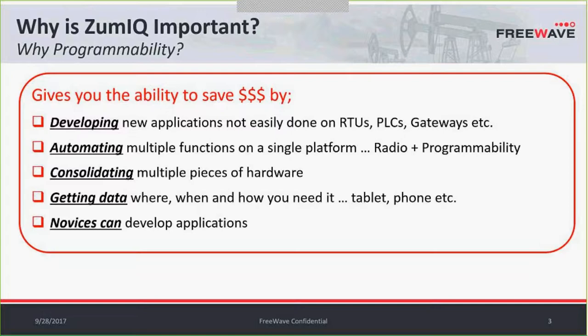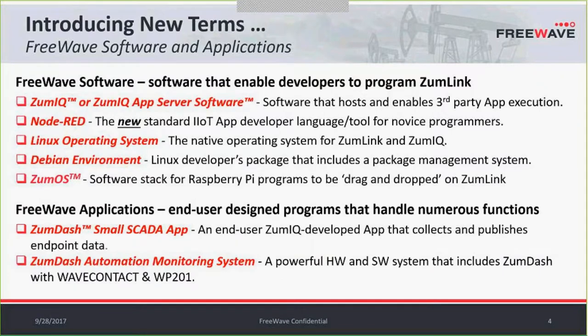ZoomIQ allows third-party apps to connect to the cloud, or you can run it directly from the app server so that you can see your data from anywhere in the world on a web-based device and automatically join the industrial IoT. ZoomIQ is no doubt a new disruptive technology with a number of different terms that might be new to you. You can think of ZoomIQ as a Linux-based Raspberry Pi that resides on a ZoomLink Z9PE Ethernet radio. Node-RED is one of the many Linux-based programming languages, such as Python, Java, or C++, that you can use to develop apps on ZoomIQ.